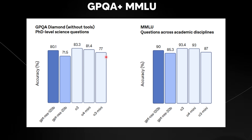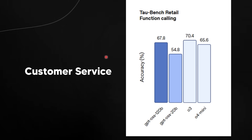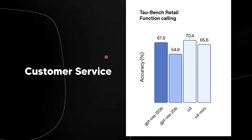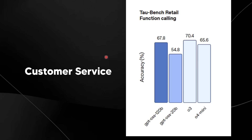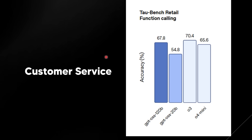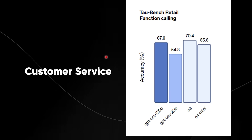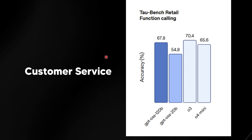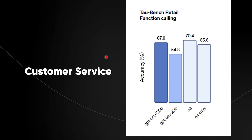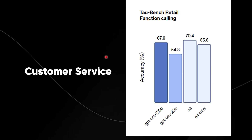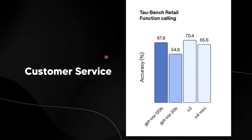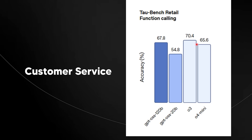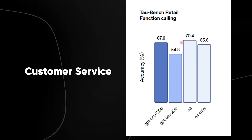One benchmark I want to highlight that most people don't talk about is Tau Bench Retail Function Calling. It evaluates AI agents handling realistic retail customer service tasks such as order cancellation, address changes, returns, exchanges, and checking order status. It emulates dynamic multi-turn conversations with a simulated user, requiring the AI to use API tools and follow domain-specific policies. The 20B model falls not far behind o3 and o4 mini, and the 120B model does exceedingly well.